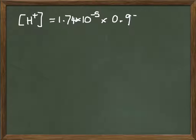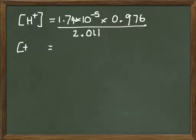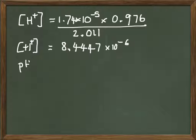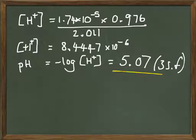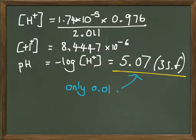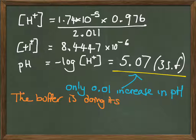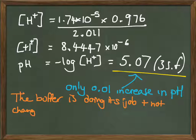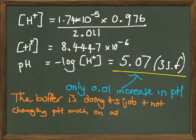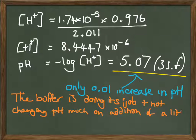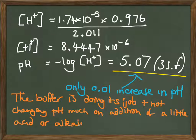Take Ka over to the other side and multiply by our ethanoic acid concentration and divide by the ethanoate ion concentration. You'll see the ethanoate ion concentration has gone up a little bit. Our ethanoic acid concentration has gone down a little bit. Our proton concentration is going to be 8.4447 times 10 to the minus 6, and then you can work out the pH by taking the minus log of that. You'll see that it's gone up by only 0.01. It's slightly more alkaline but not significantly. It's doing its job and not changing its pH much on addition of a little acid or alkali. Excellent!